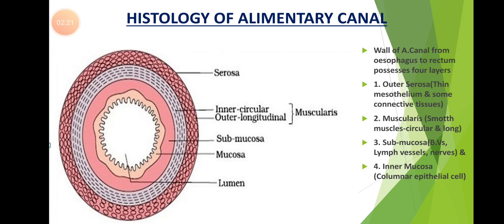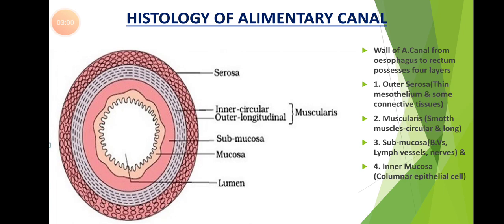The innermost layer surrounding the gut is called as the mucosa. This innermost layer is made up of columnar epithelial cells. The mucosa layer forms irregular folds. These irregular folds are observed in the stomach and are called as rugae — gastric rugae. They are also observed in the small intestine as small finger-like structures called villi. These are formed by the inner mucosa.